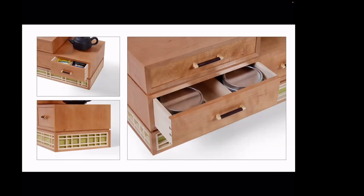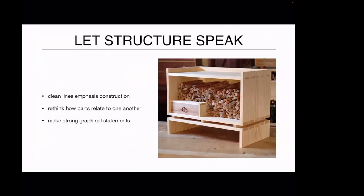Something else that I do — and you can see it in the tea cabinet we just looked at — is something the Shakers did extremely well: using the structural elements of a piece to create something aesthetically pleasing. They would use the drawers and doors of a piece to create patterns on the front of a sewing counter or sewing desk. When you strip down to just the lines and proportions, the structure of a piece — the individual components — has a stronger voice, a stronger visual presence. You can use them to create something that's aesthetically appealing and interesting to look at.